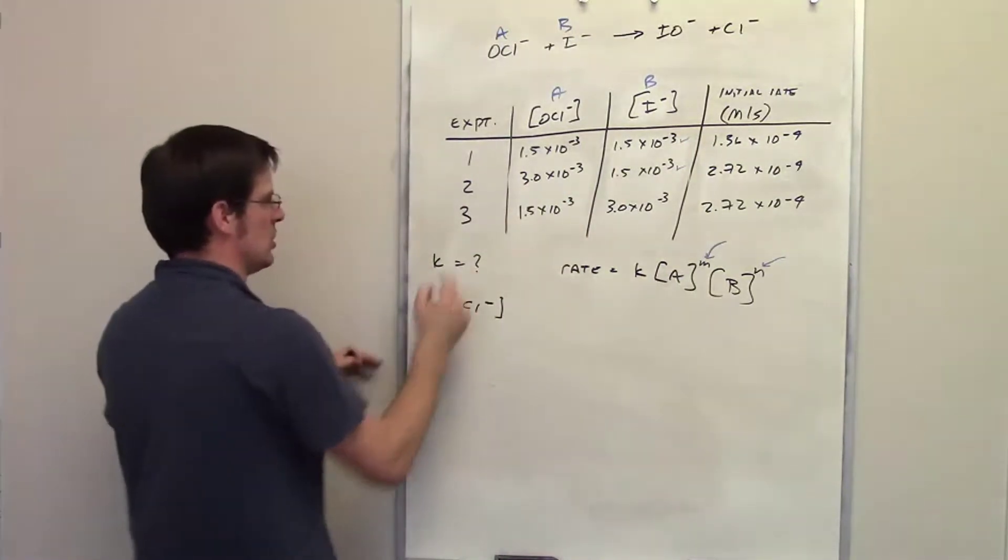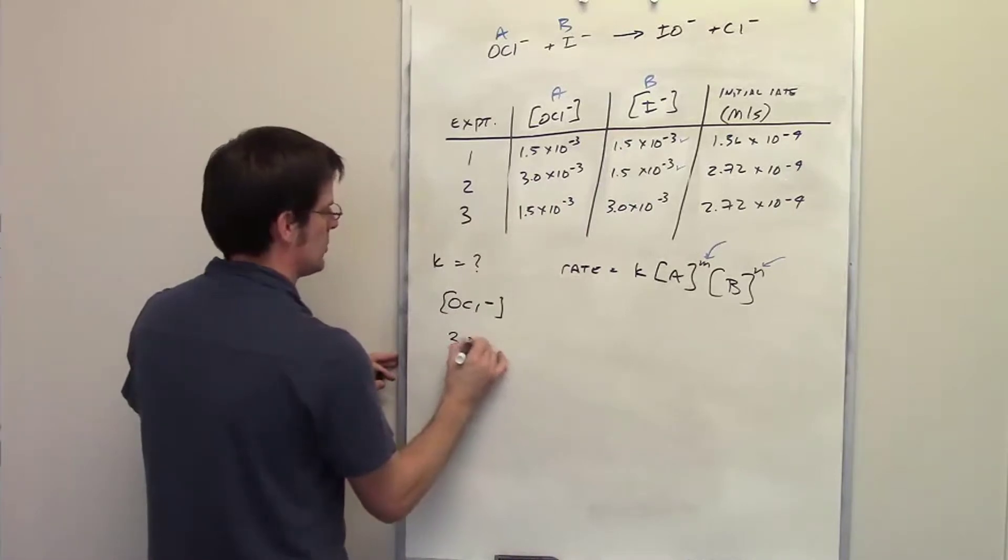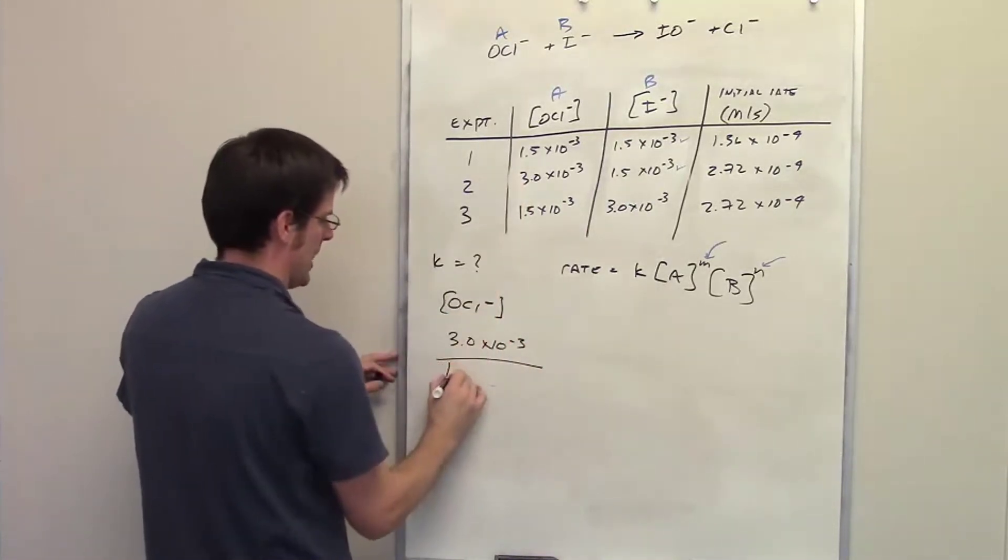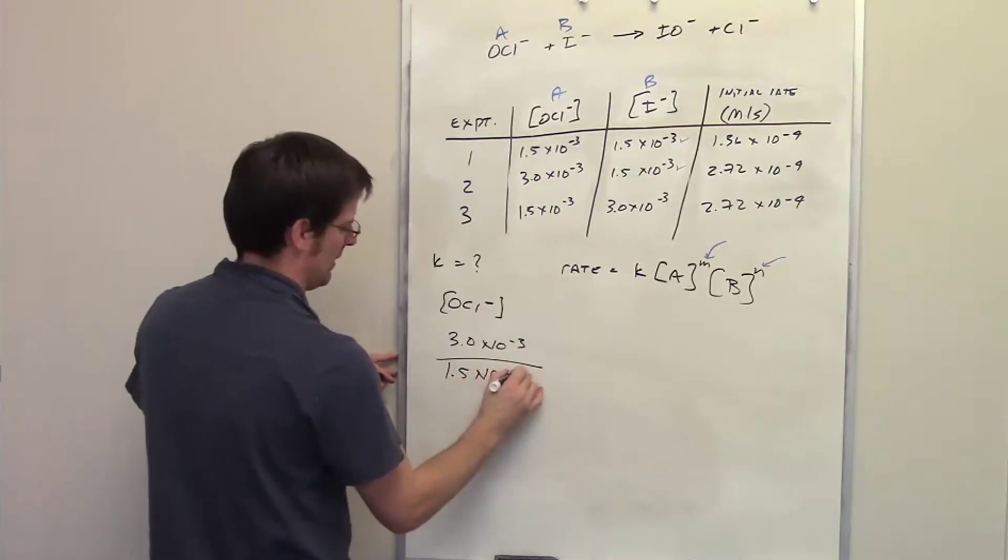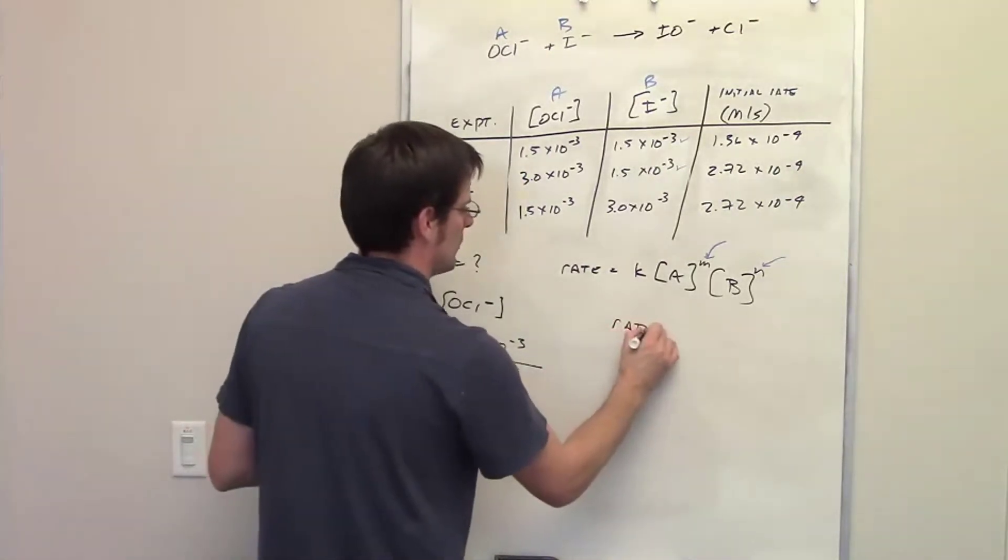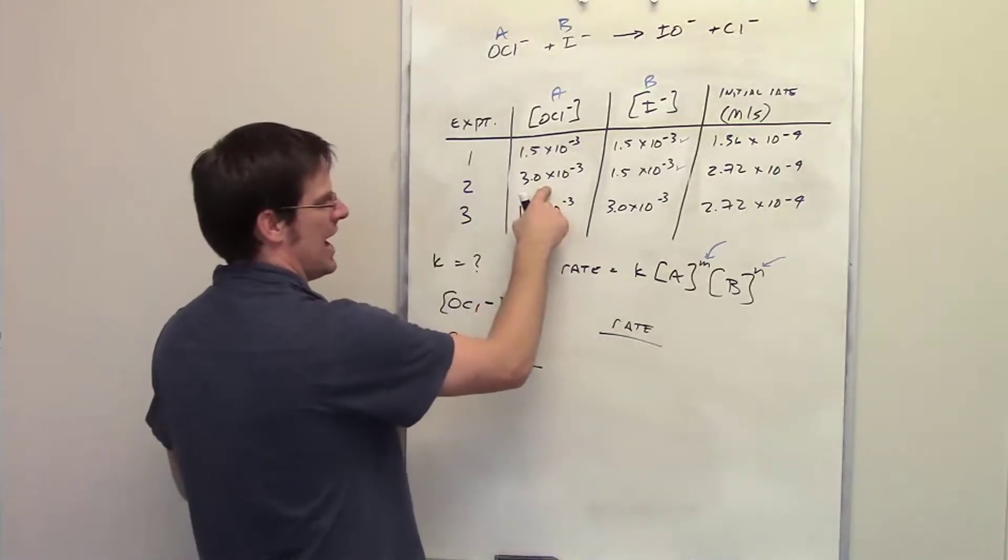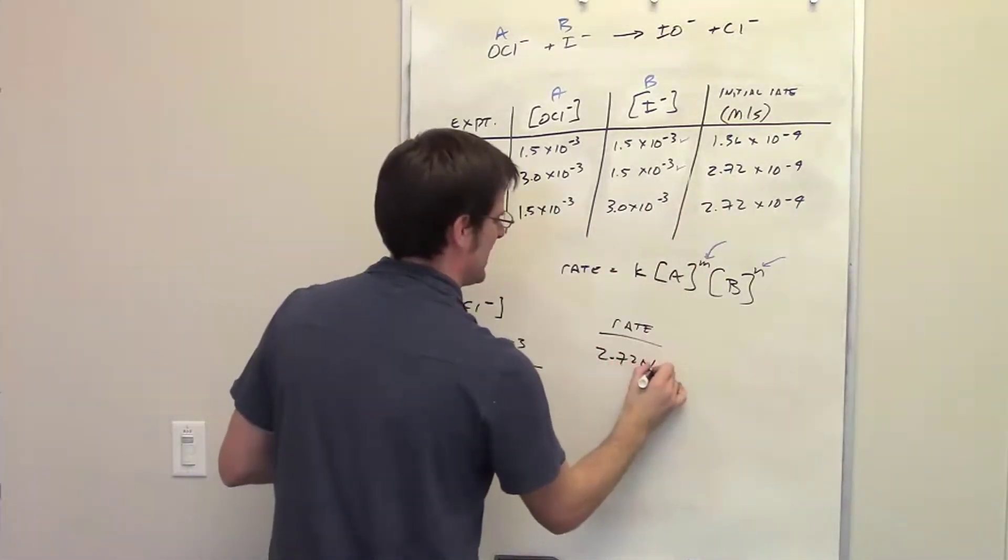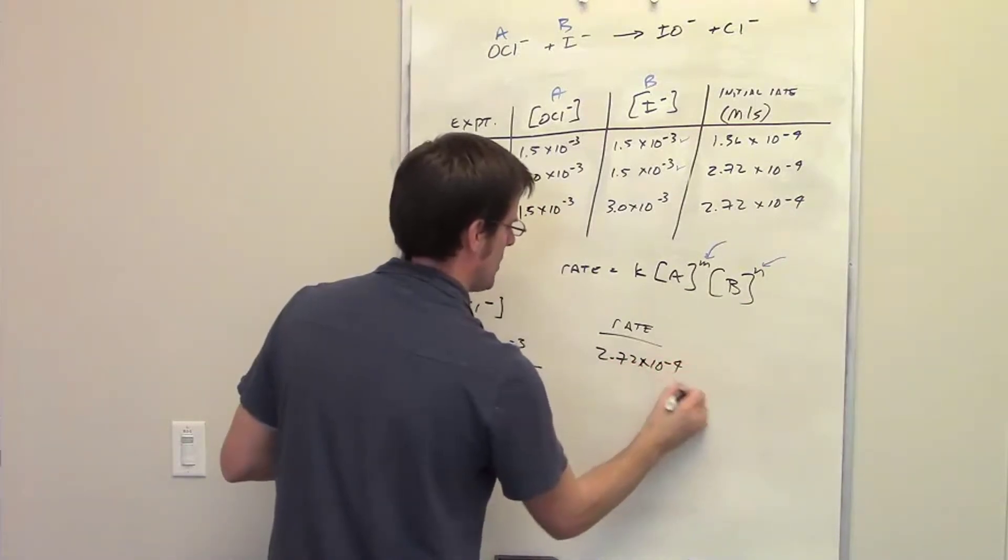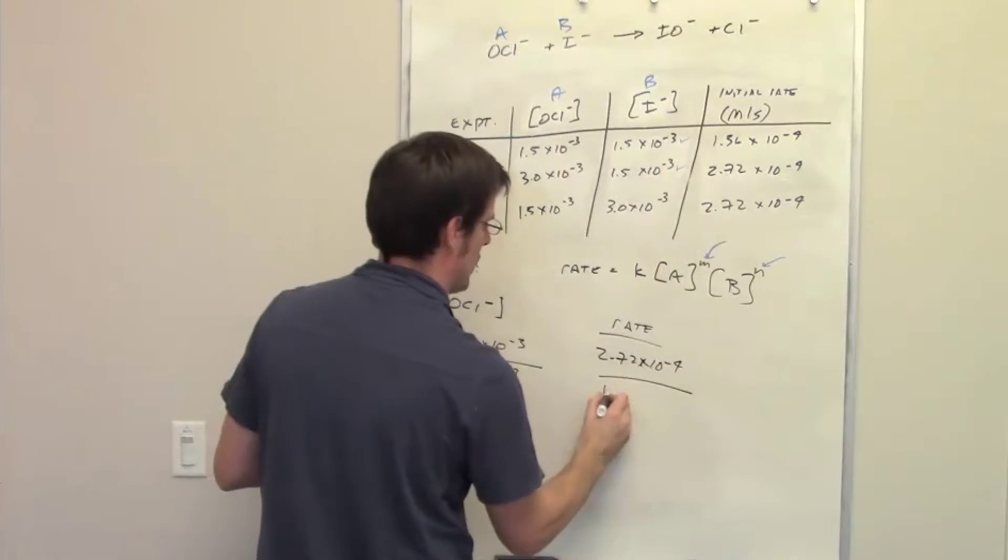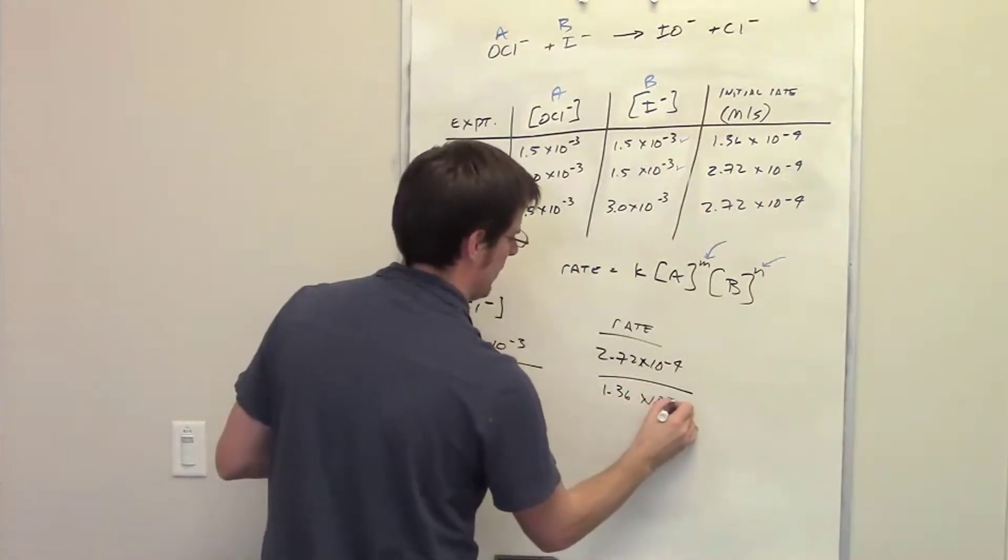I'm going to take the bigger of the two. In experiment 2, the concentration was 3 times 10 to the negative third. In experiment 1, it was changed to 1.5 times 10 to the negative third. Now I'm going to look at the relative rates. The rate, when I had the concentration higher here, was 2.72 times 10 to the negative fourth. And when I lowered the concentration, it went down to 1.36 times 10 to the negative fourth.